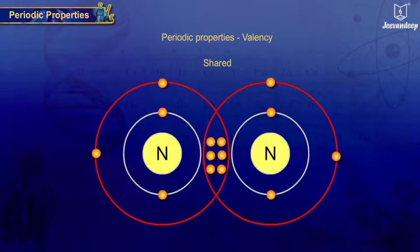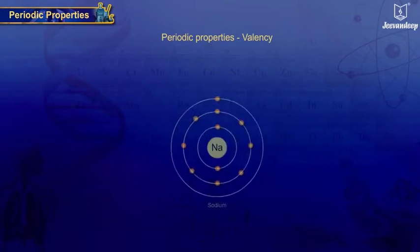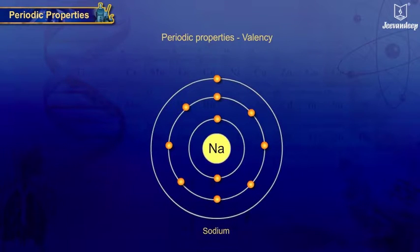For example, a sodium atom with atomic number 11 has two electrons in the first shell, eight electrons in the second shell, and one electron in the outermost shell, that is the valence shell. Thus, the number of valence electrons is one.